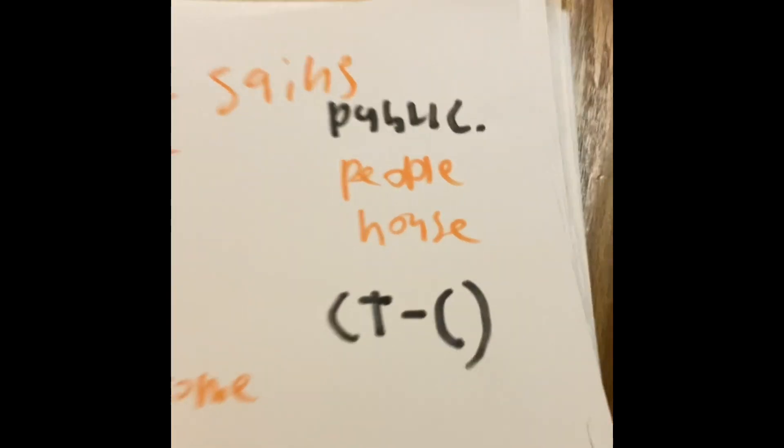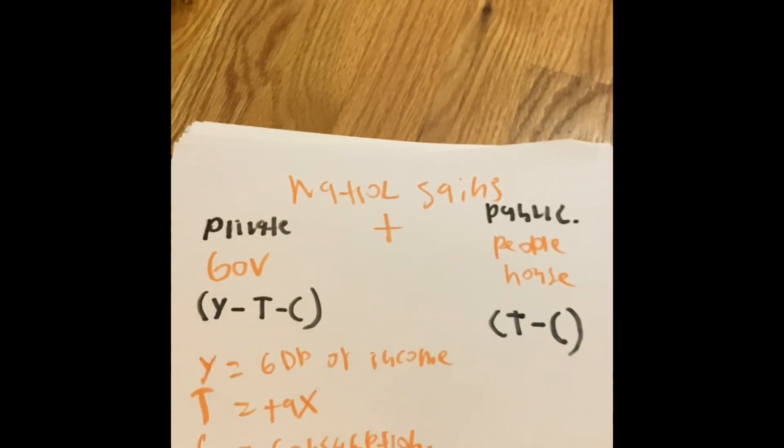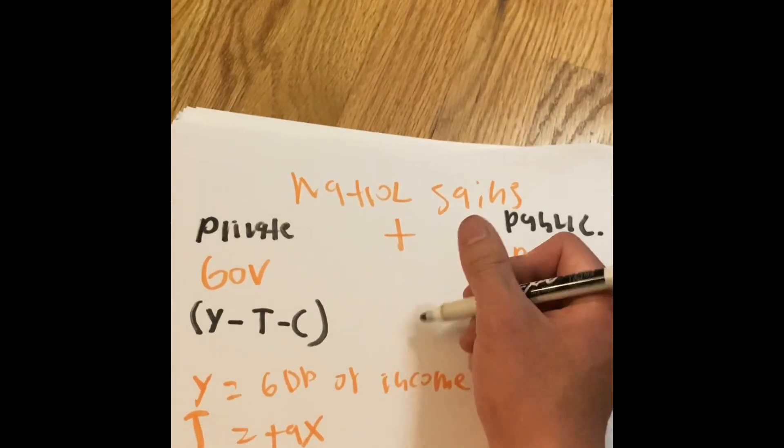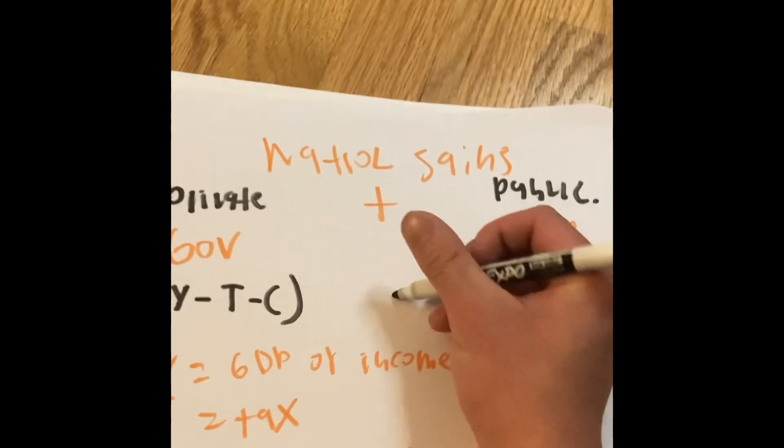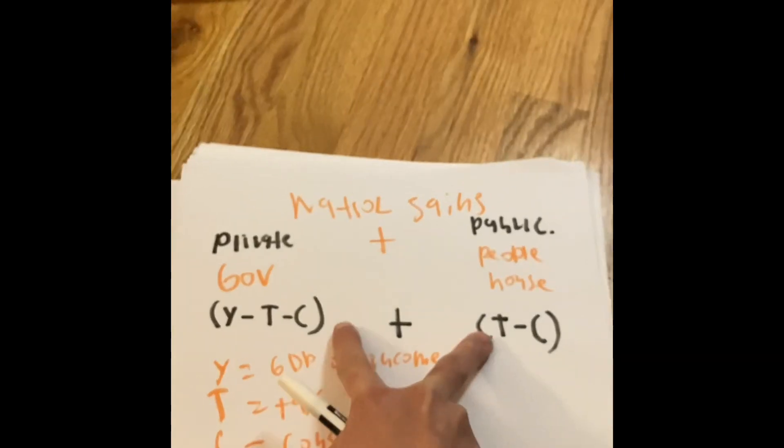So national gain, or national debt, or national savings, I mean, is actually going to be the sum of the two.